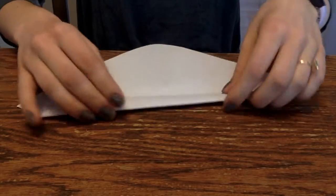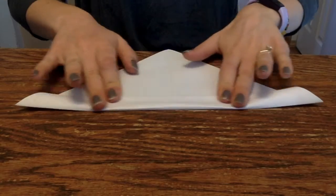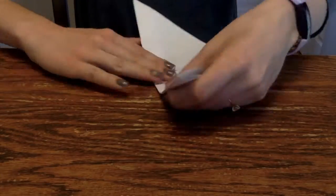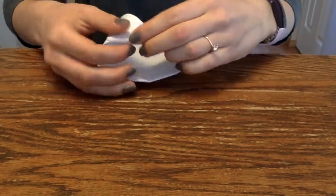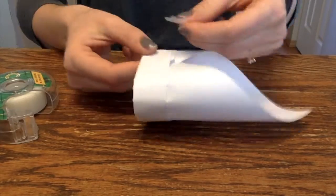Fold one more time so that the corners are making points at the end of your folded tube or rectangle. With the folds facing out, wrap the two corners together to form a cylinder and tape it together.